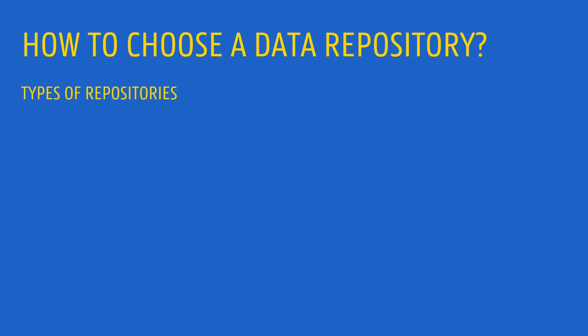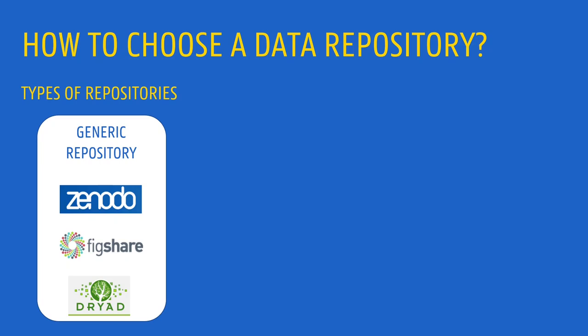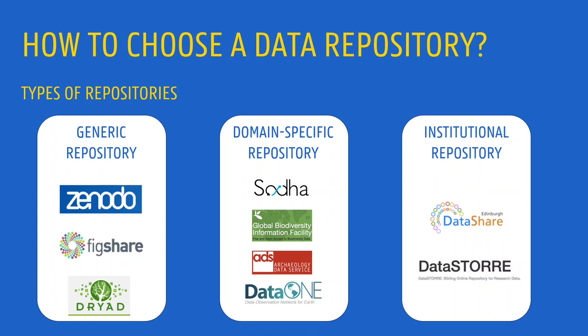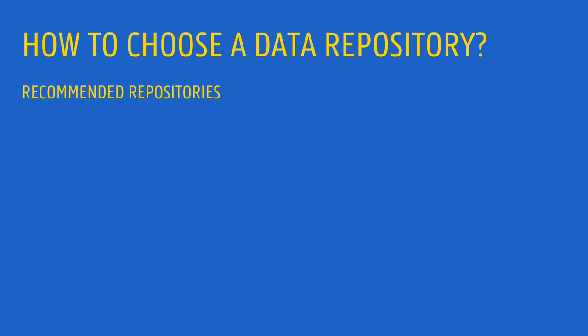So how do you choose a suitable repository? Different types of repositories exist. There are generic repositories, which allow depositing data independent of the scientific domain or data type. Besides, there are domain-specific repositories, which are narrower in scope and only manage specific data types. It depends on your field whether a suitable domain-specific repository already exists. Further, there are institutional repositories that hold data from a particular research institution. A good starting point is to check whether any repositories are recommended in your field. In some research domains, a consensus is reached regarding the best-suited repositories for a specific purpose or data type.